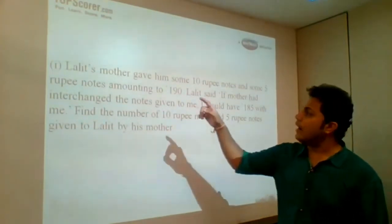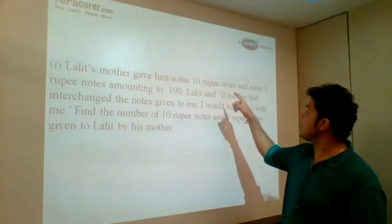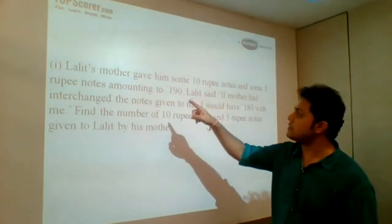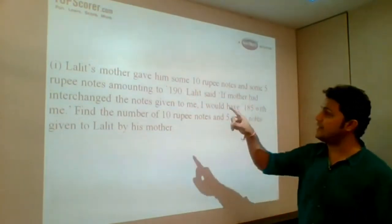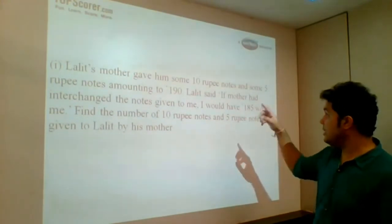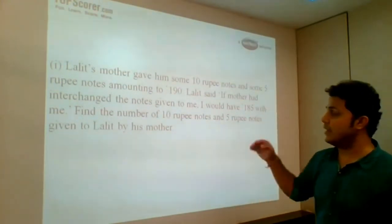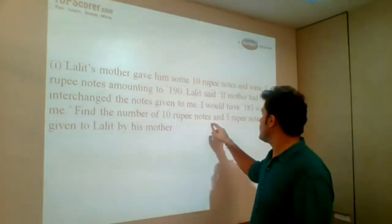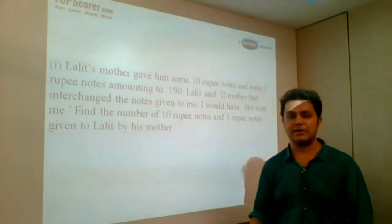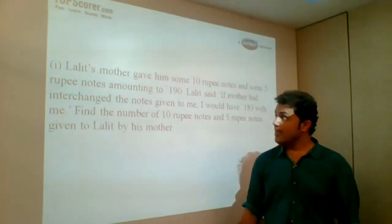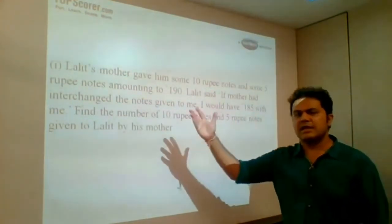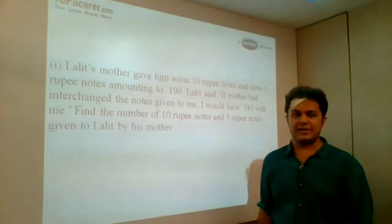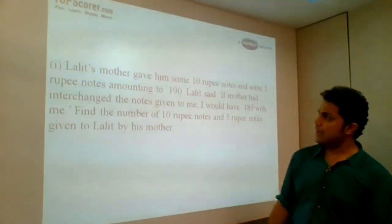Now, Lalit's mother gave him some 10 rupee notes and some 5 rupee notes amounting to rupees 190. Lalit said, if mother had interchanged the notes given to me, I would have 180 with me. Find the number of 10 rupee notes and 5 rupee notes given to Lalit by his mother. This is the question from algebra. This is just an understanding. This is again a sum which is not there in the textbook.